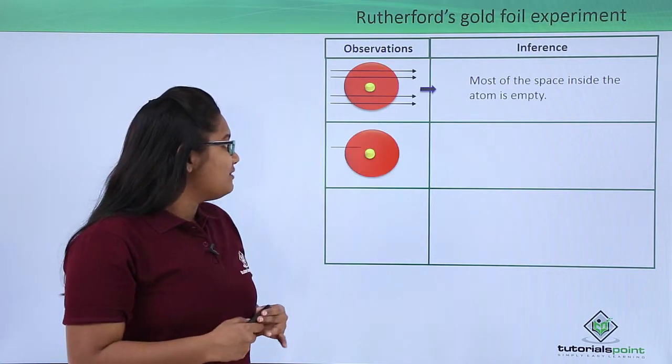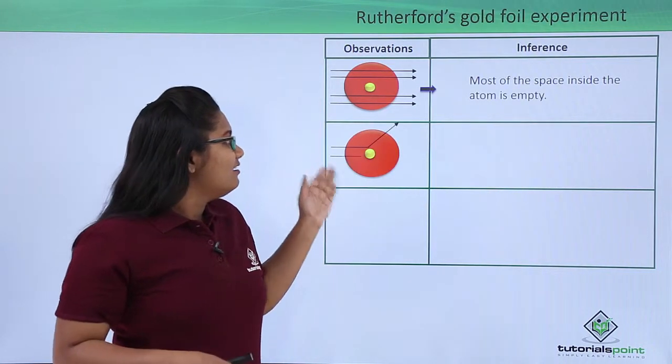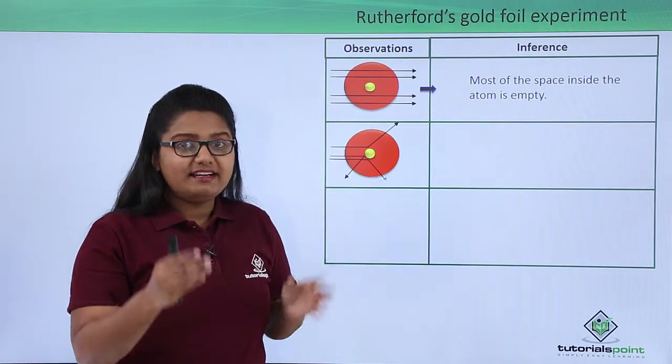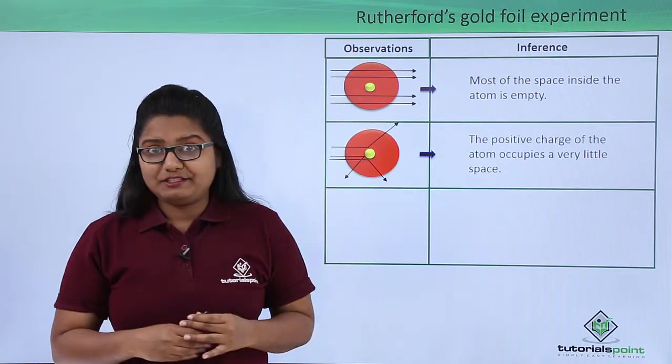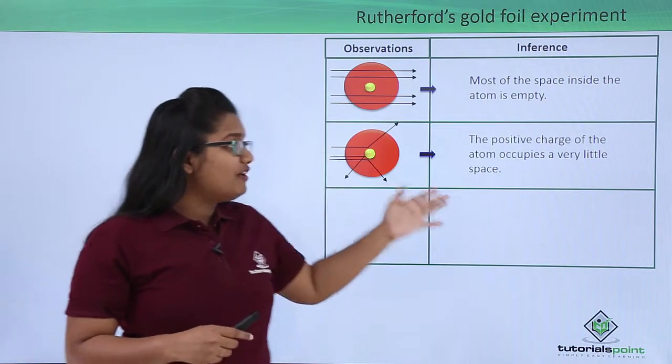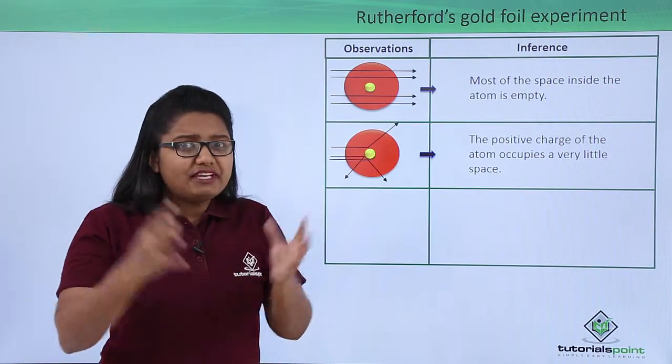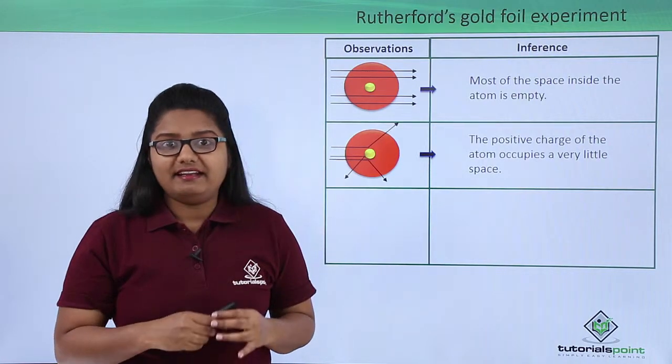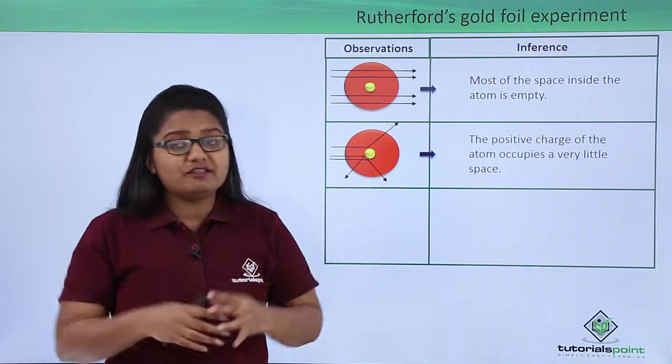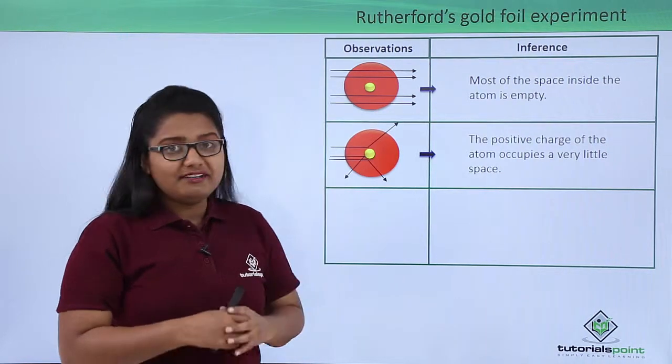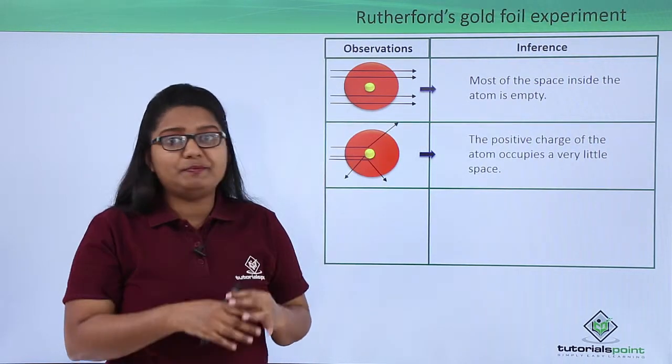The second observation was that a few alpha particles got deflected from their paths at certain angles. From this he inferred that the positive charge in an atom is fixed to a very small volume inside the atom. It doesn't occupy the full space like Thomson's model, but a very small space.